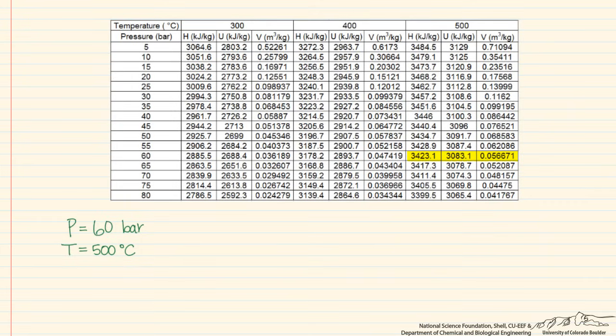And the properties we therefore have are the specific enthalpy, which is 3423.1 kilojoules per kilogram. The specific internal energy, which is 3083.1 kilojoules per kilogram. And finally, our specific volume, which is 0.056671 meters cubed per kilogram.